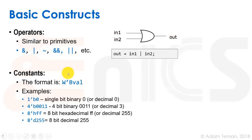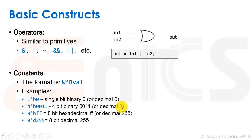Constants have a specific format in Verilog: width, then an apostrophe, then the encoding type, then the value. For example, to write a single-bit zero: '1'b0' — one-bit binary zero. For a longer constant, a four-bit binary value: '4'b0011', which in decimal is three.